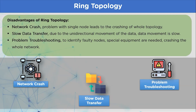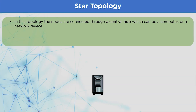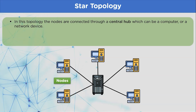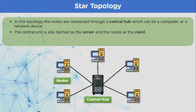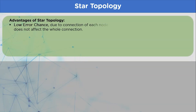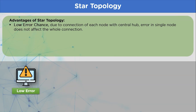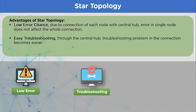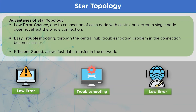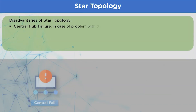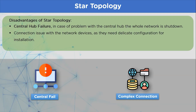Star topology: in this topology, nodes are connected to each other through a central hub, which can be a computer or a server. The central unit is known as the server and the nodes are known as clients. Any connection between nodes must go through the server, making it one of the most popular topology connections. Advantages: in case of a node crash, the network remains unaffected since each node is independently connected to the server. Hardware requirements are low cost and easily available, and troubleshooting is easy using the central hub to identify faulty nodes. Disadvantage: in case of server failure, the whole network shuts down, and the connection configuration is complex due to the topology pattern.